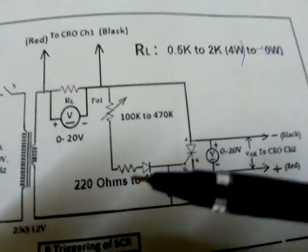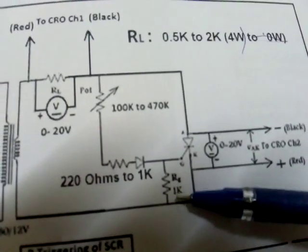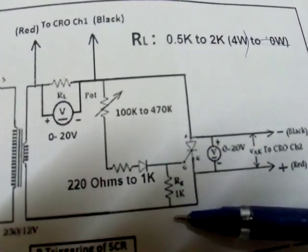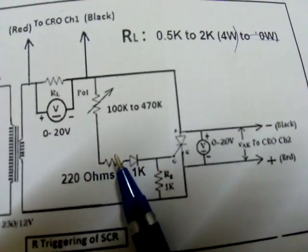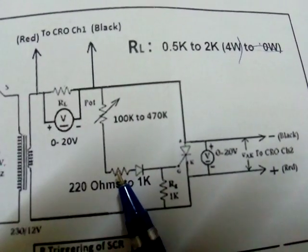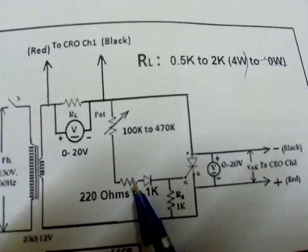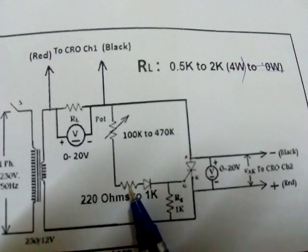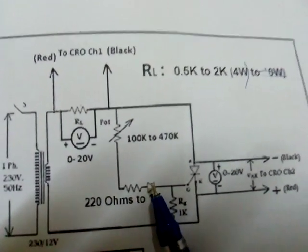And this one, there is no need to connect the 1k resistance between the gate and cathode. And preferably put this 1k, this resistance as 1k initially. If you don't get waveform then reduce this to say 500 ohms, means 560 or 470 ohms.